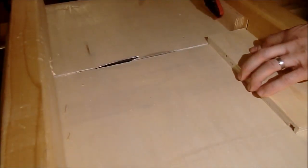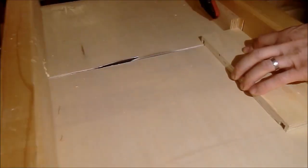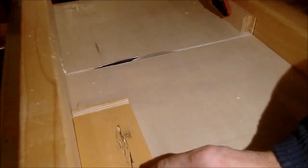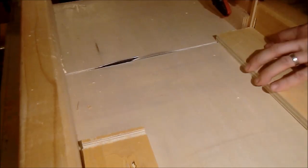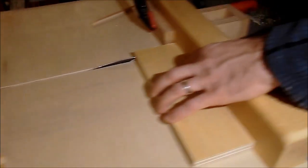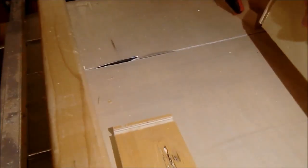I have clamped a block stop in order to secure the correct start of the rabbet. In addition I am using a spacer for the first cut. That spacer represents the width of the rabbet.